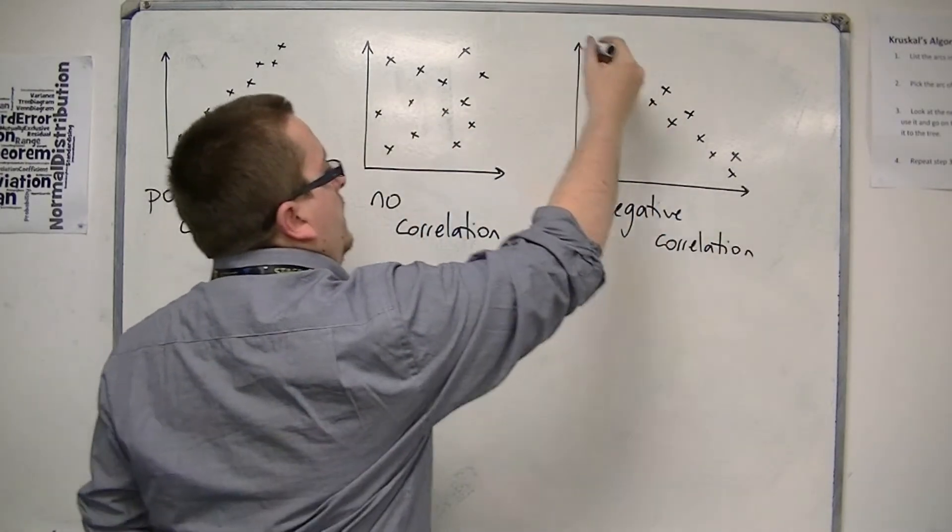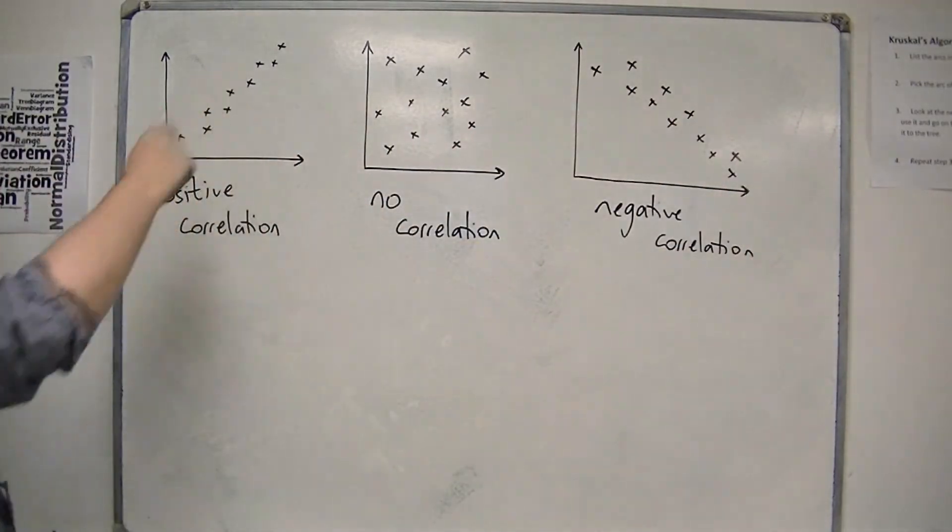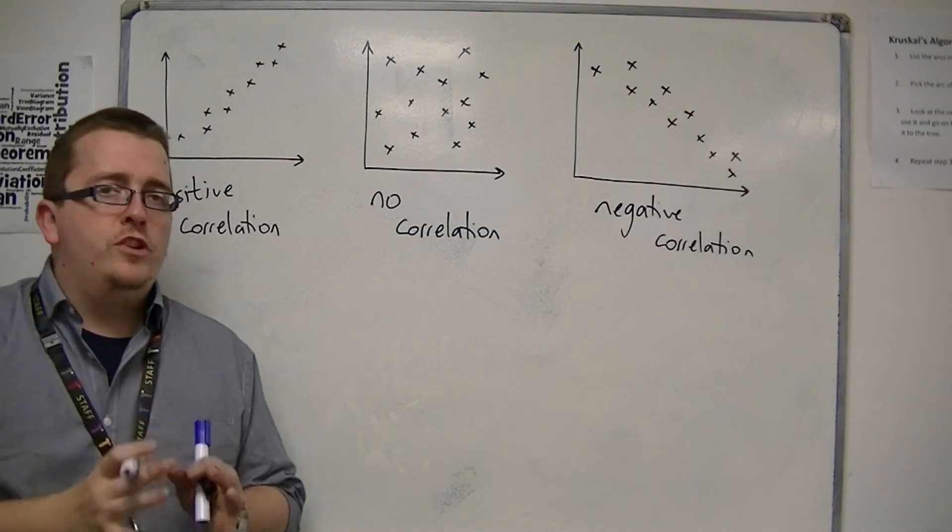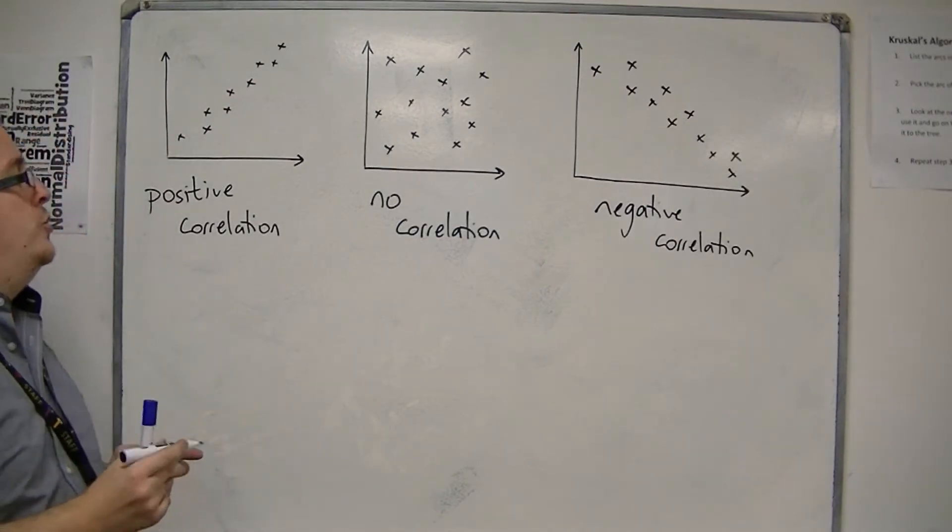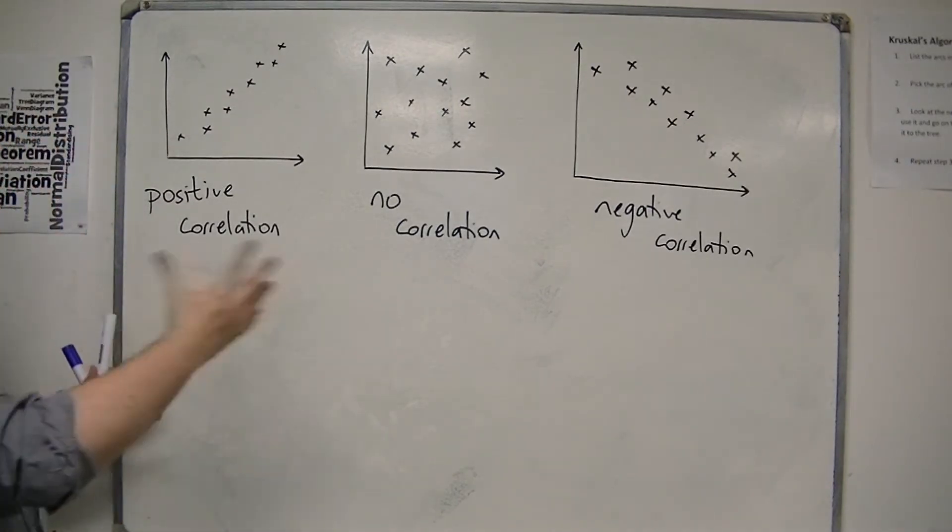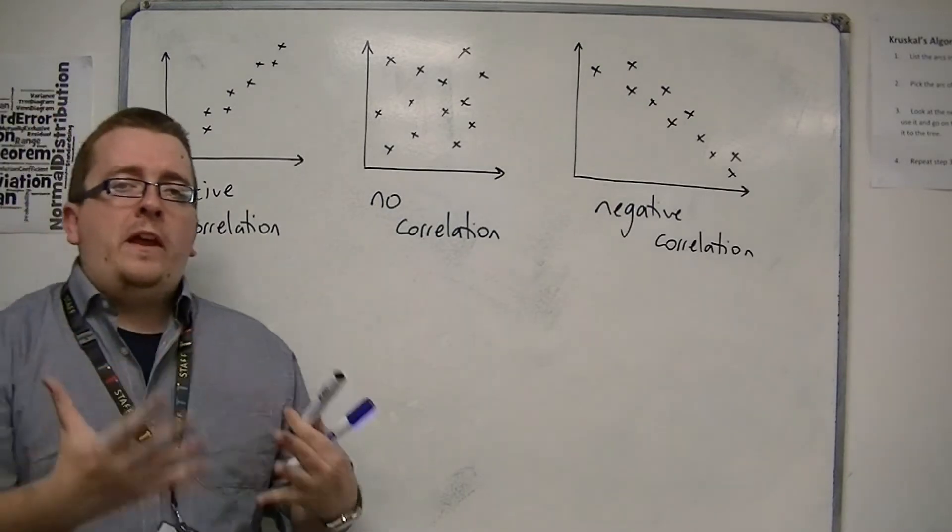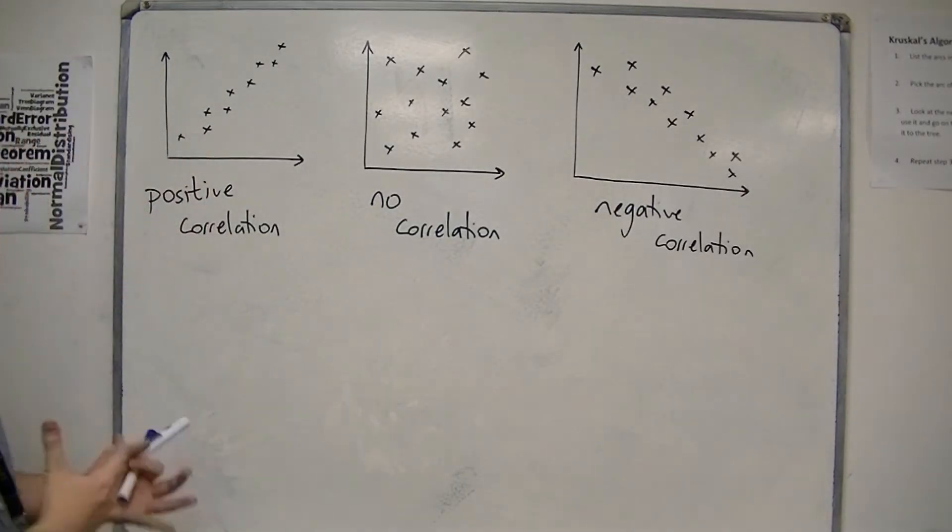The closer the correlation resembles a straight line, the stronger it is, the stronger the connection. What examples might we consider? What would we expect to find from these?